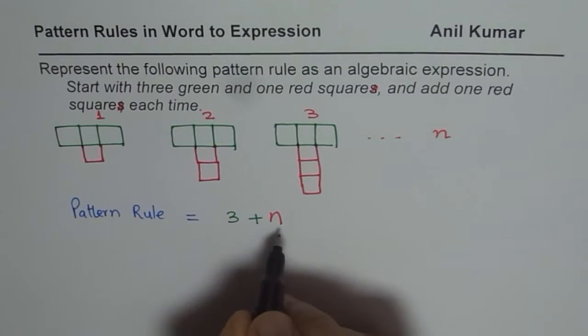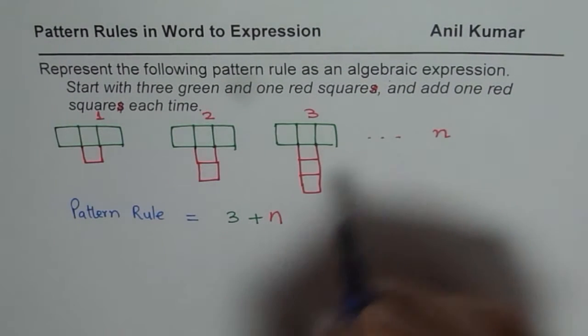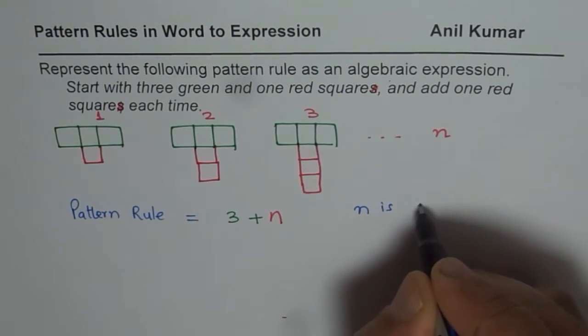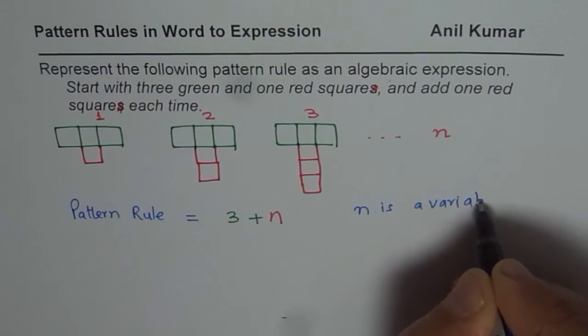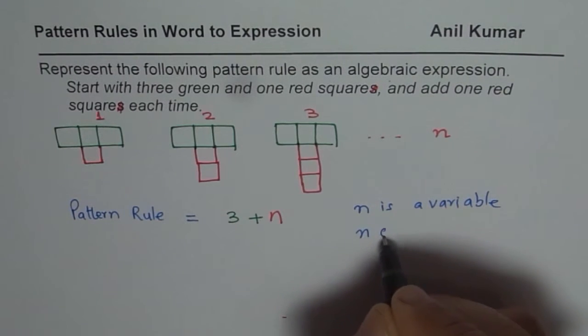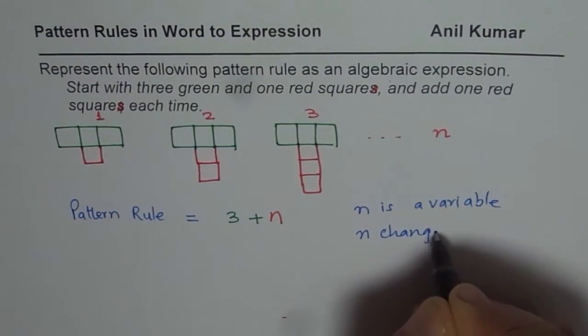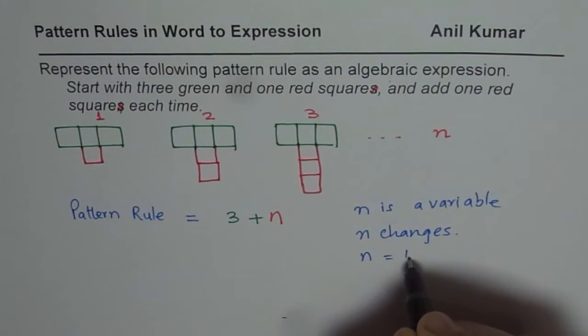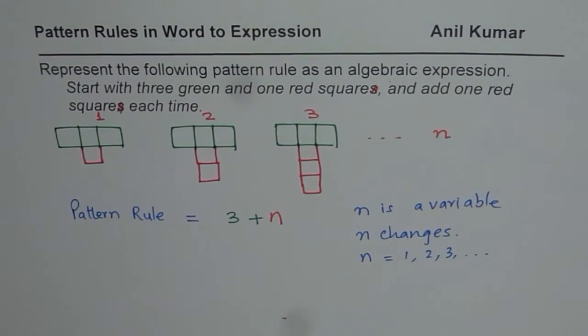And we call this as an algebraic expression where n is a variable. Variable means a number whose value changes. N changes since it is a variable. And what values can it have? n could be equals to 1, 2, 3, and so on.